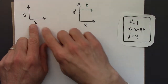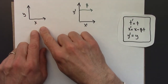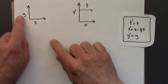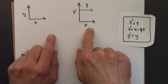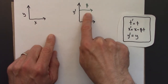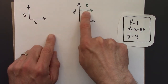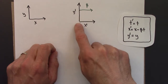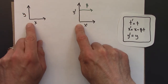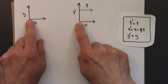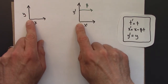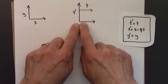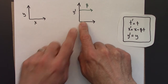As before, let's say we have two frames: a frame at rest, and a frame that's moving with speed beta. And we want to know what an observer in the moving frame would measure for velocity, given a certain velocity in the rest frame.